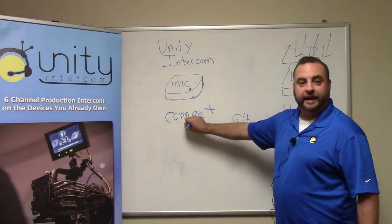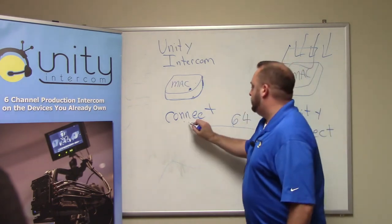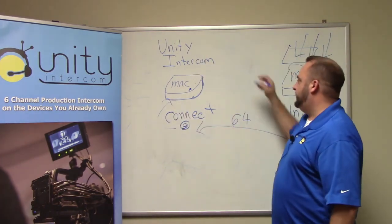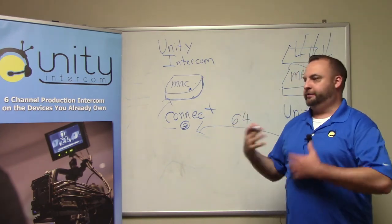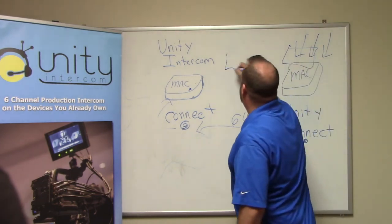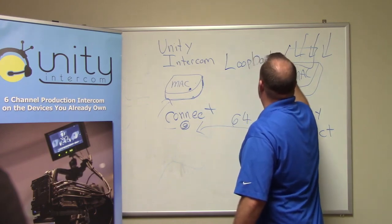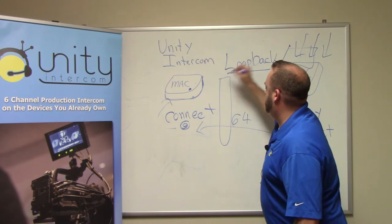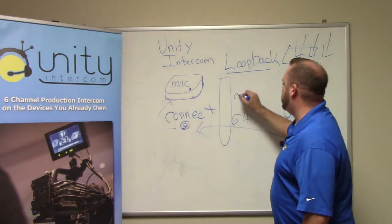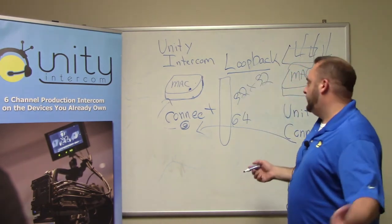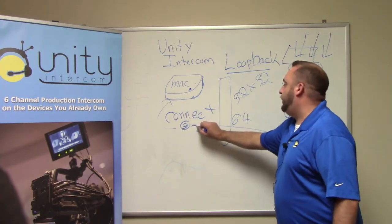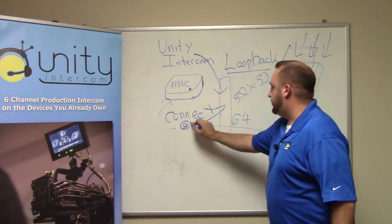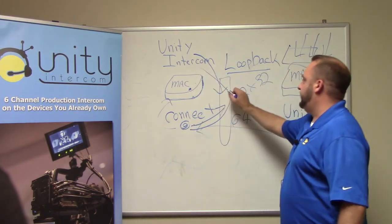We send that audio to this Connect at our office location. Now, Unity Connect doesn't directly write to Unity Intercom. So what we do is we need an aggregate audio device, which is a software virtual audio device. The one we like to use is Loopback. This is going to get messy. Loopback by Rogue Amoeba creates a virtual audio device. That virtual audio device could be like a 32 by 32, or a 64 by 64. And we take Unity Connect, and we output Connect to Loopback. Then we take Unity Intercom, and we input from Loopback. So Connect is writing to Loopback, and then Unity Intercom is taking from Loopback, thus marrying the two.